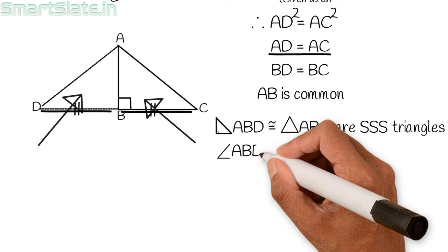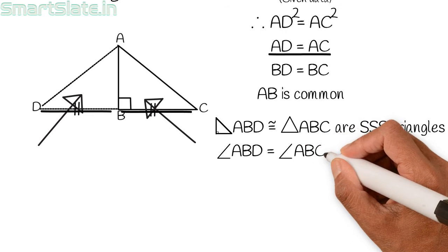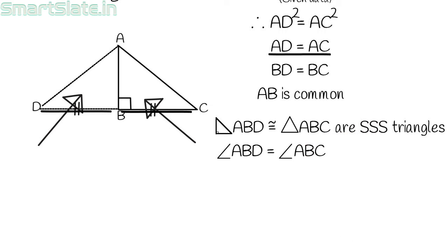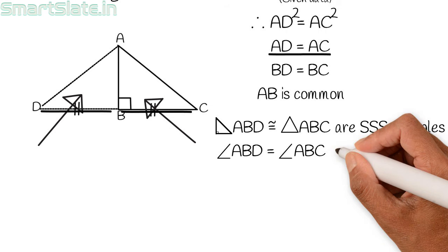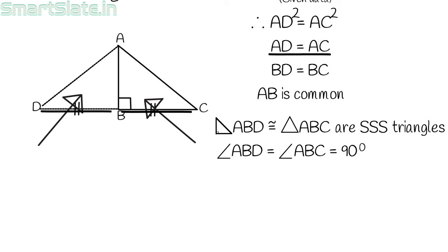Hence angle ABD equal to angle ABC. Since angle ABD is 90 degrees, angle ABC is also 90 degrees. Here we have proved converse of Pythagoras theorem.